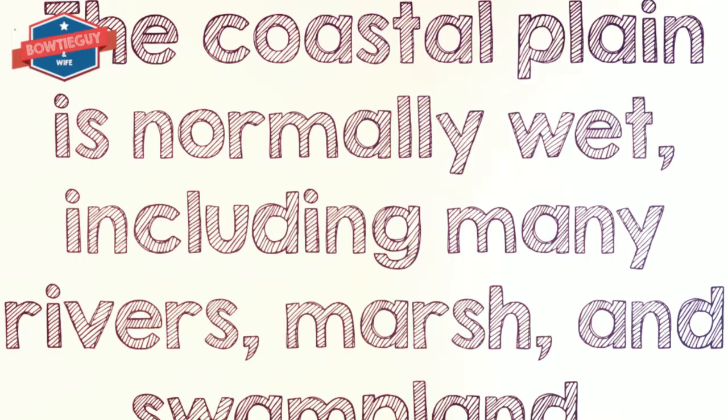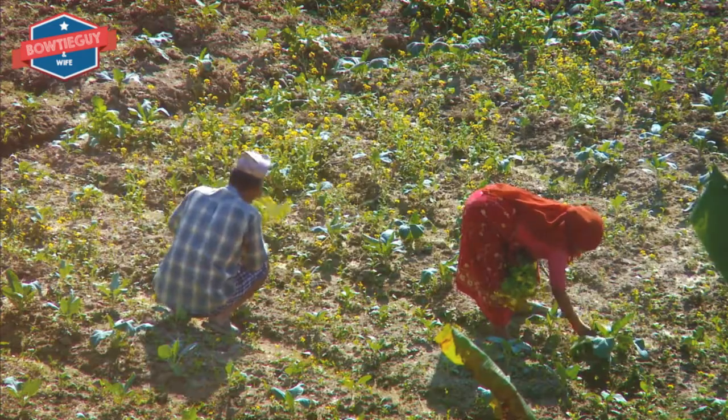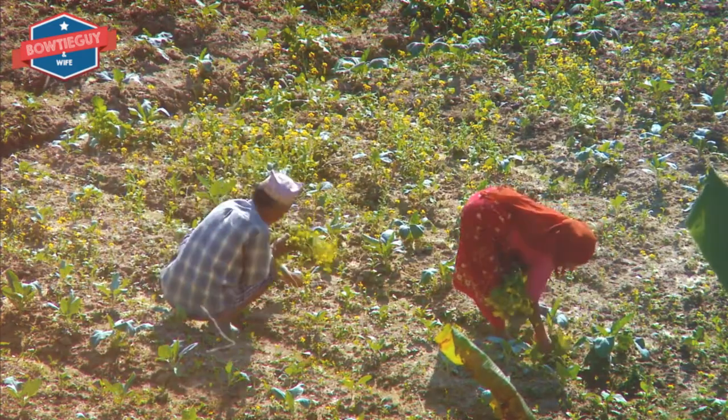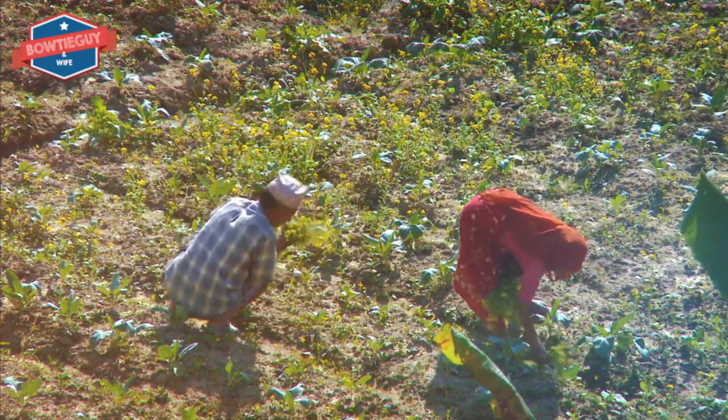The Coastal Plain is normally wet, including many rivers, marshes, and swampland. Its geography is specifically located within the Atlantic Coastal Plain. The highest elevation in its state is about 450 feet.